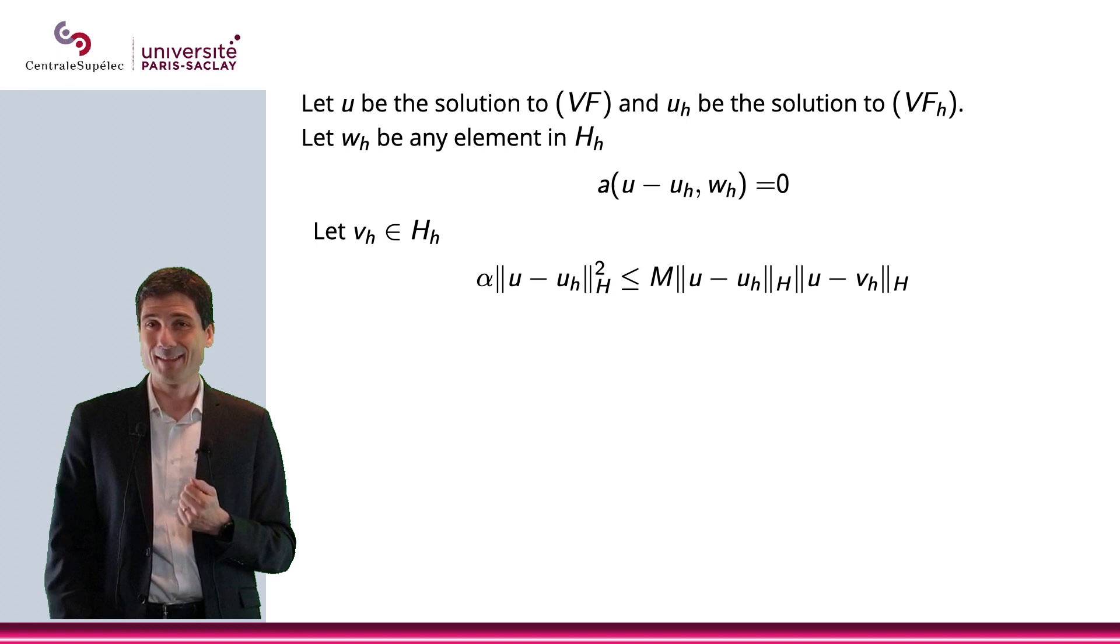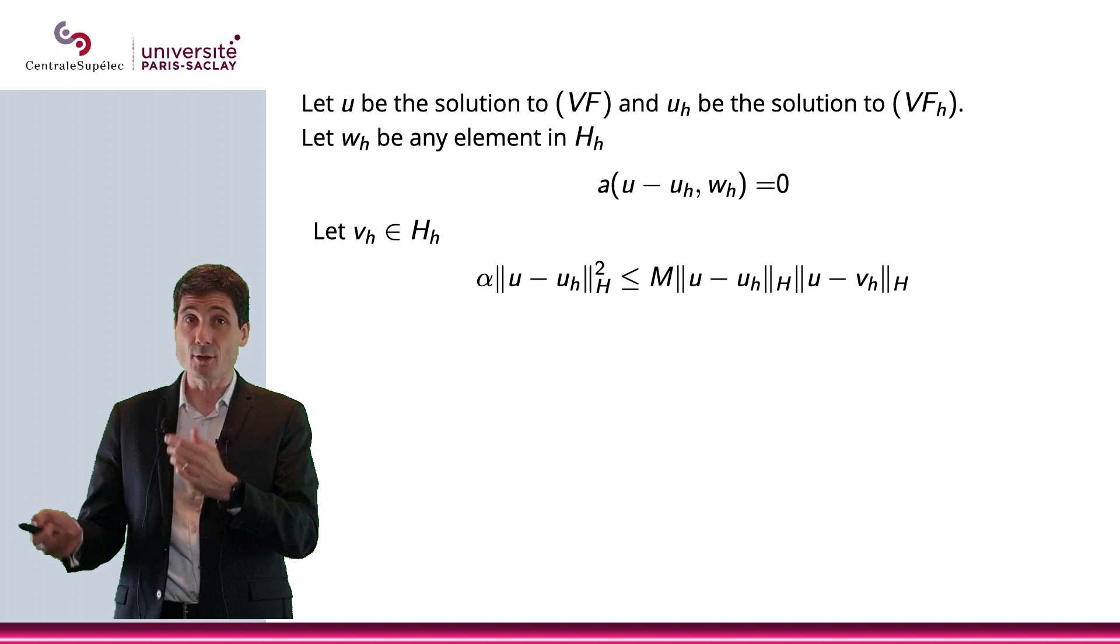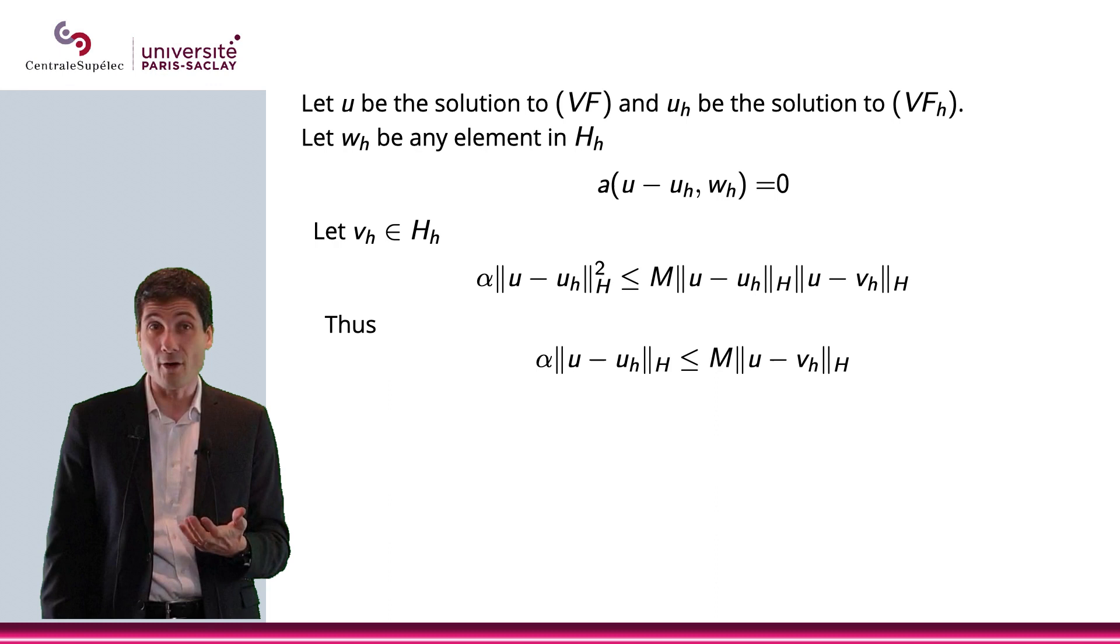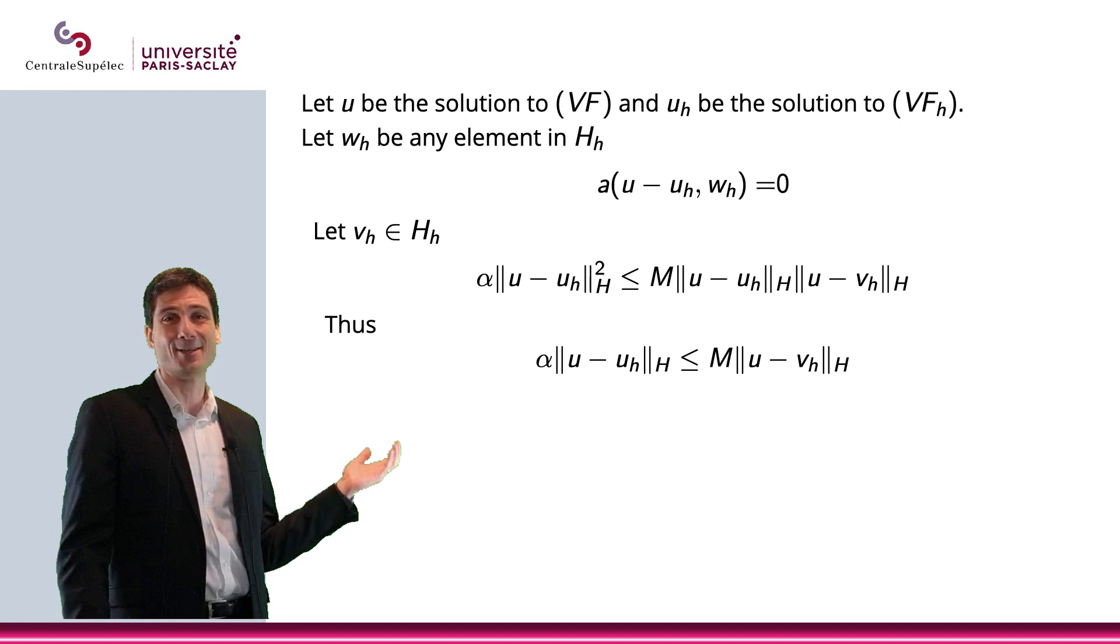Now, two things can happen. Either u - uₕ is equal to zero, and then we can just open the champagne, or it's not, and I can simplify by ||u - uₕ||ₕ. And I'm left with this inequality. Or, if you prefer, ||u - uₕ||ₕ smaller than M/α ||u - vₕ||ₕ.